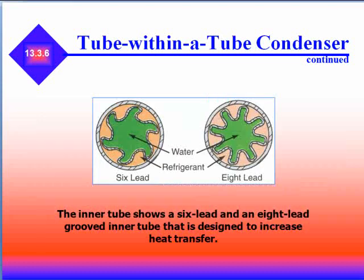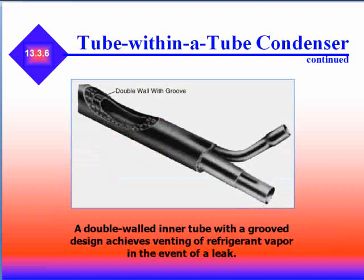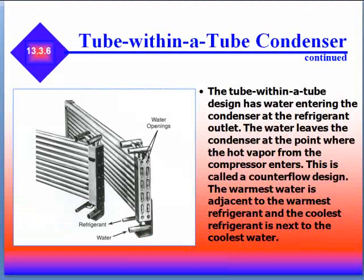One problem with the tube-in-tube condenser is that minerals will eventually build up on the inlet of the tube, which decreases heat transfer. A double wall inner tube with a groove design achieves venting of refrigerant as a vapor in case of a leak. The tube-in-tube design uses counter flow — water enters at the refrigerant outlet and leaves at the point where hot vapor from the compressor enters — so the warmest water is always adjacent to the warmest refrigerant and the coolest refrigerant is next to the coolest water.